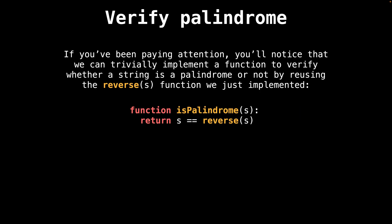If you've been paying attention, you may have noticed that we can easily create a function to check if a string is a palindrome or not by reusing the previously implemented reverse function. Simply check whether the string is equal to the reverse of itself.